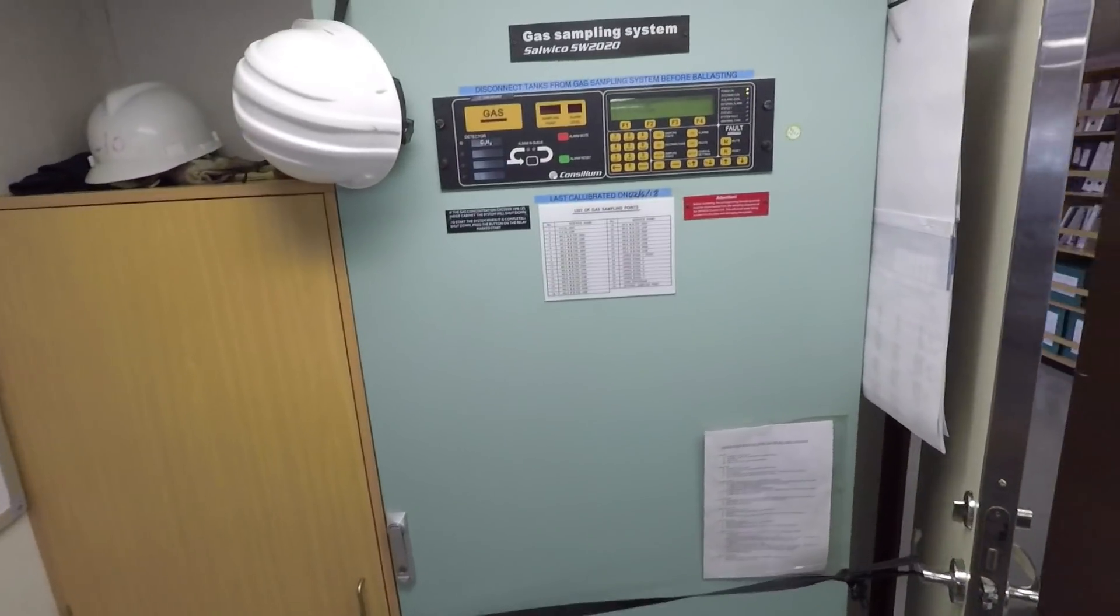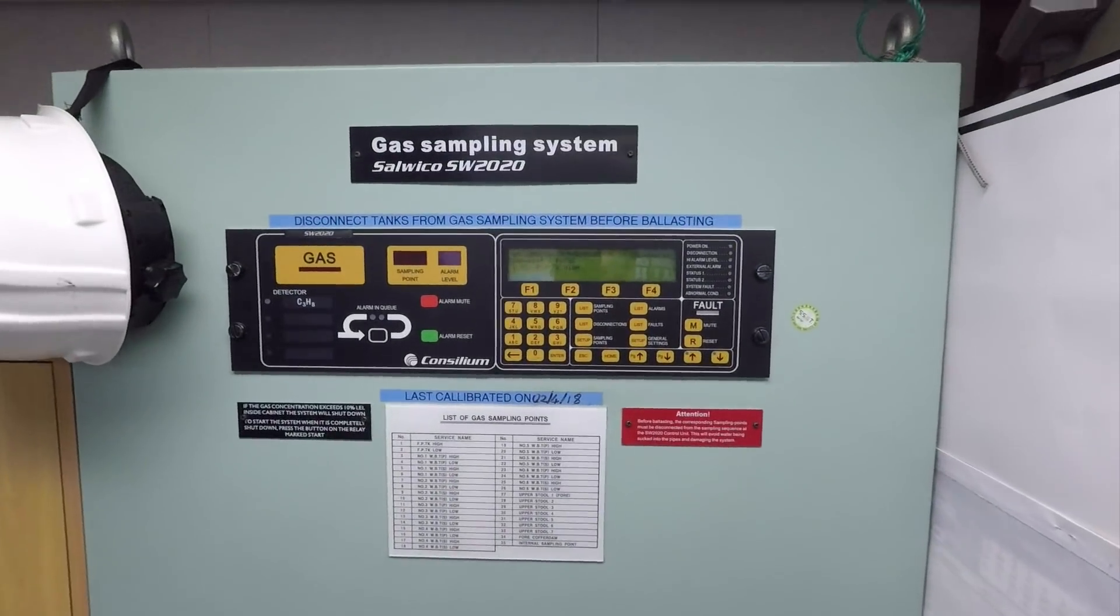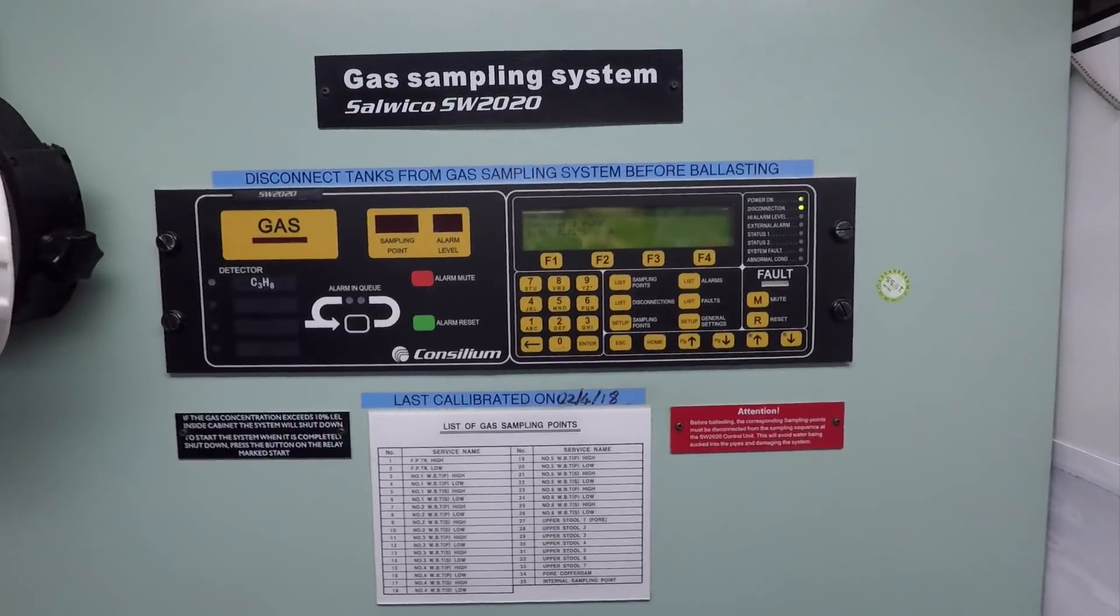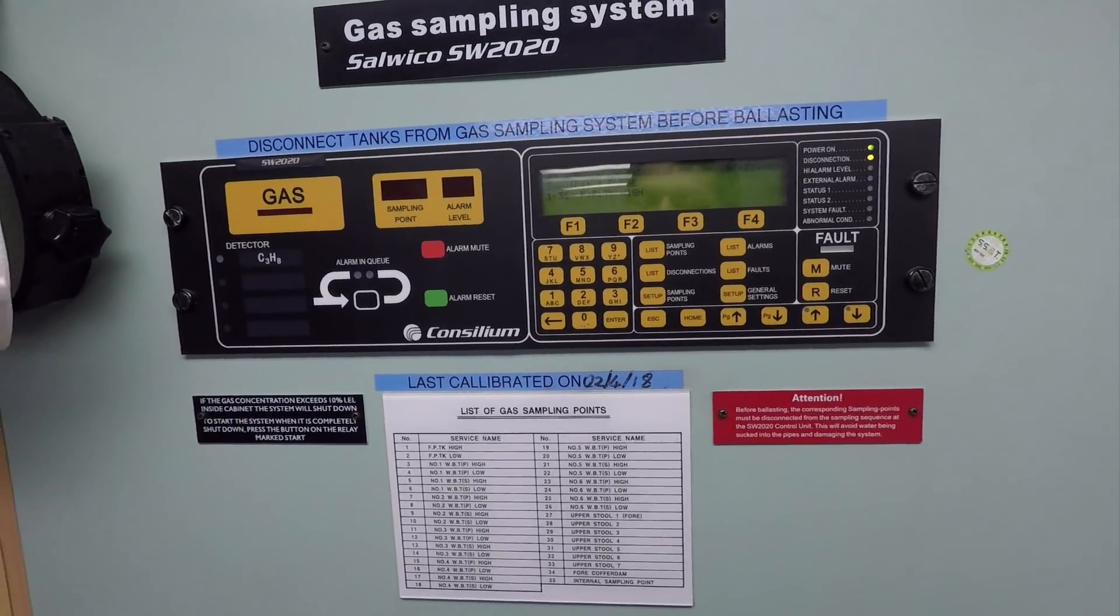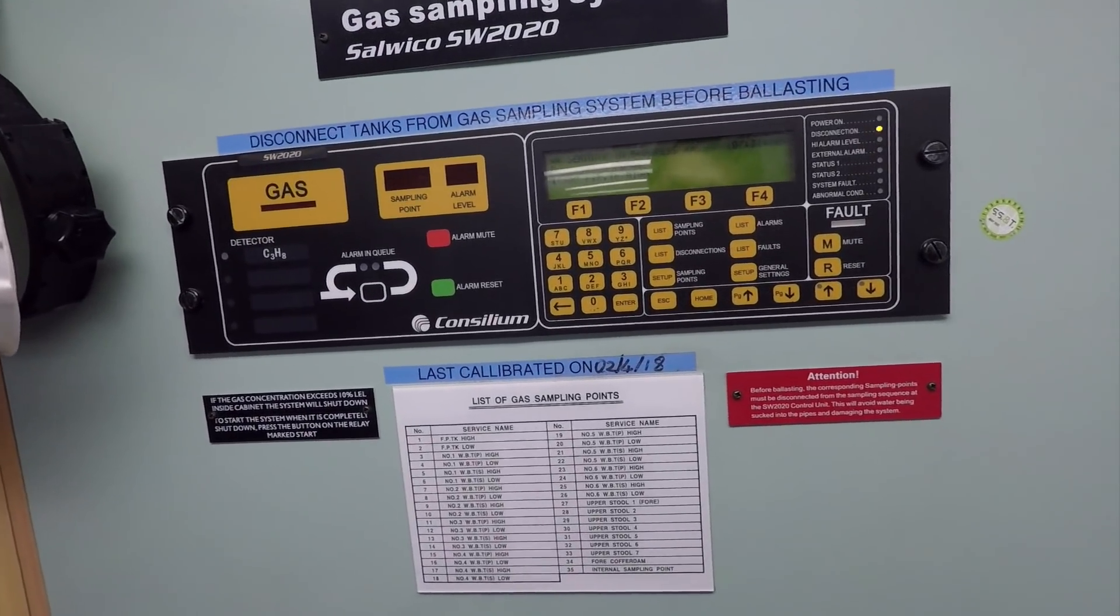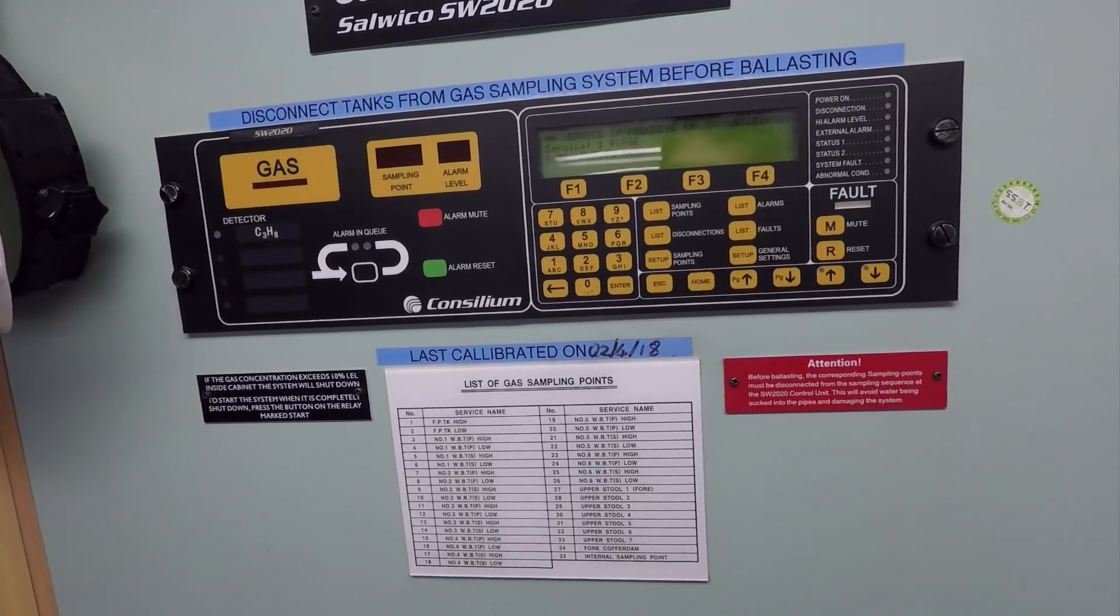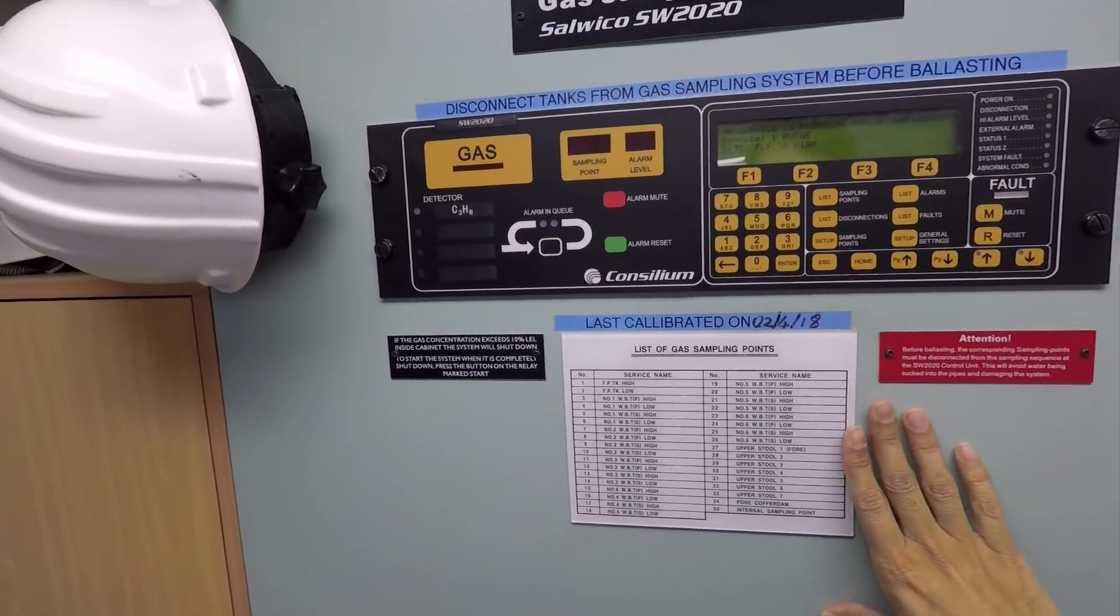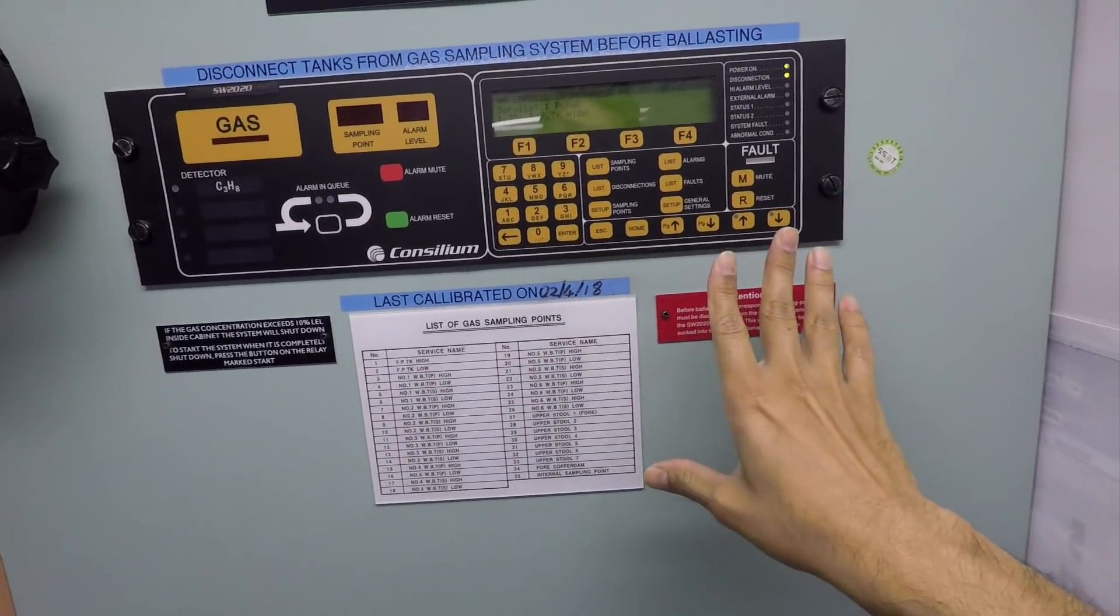Gas monitoring system, here it is. So chief officer selects the tanks which are empty tanks. Tanks which have ballast, they are offline, because otherwise the system will suck some water and there will be problems for the sensors. This one is a gas sampling system which gives you alarm as soon as there is any gas detected in the void spaces or water ballast tanks.